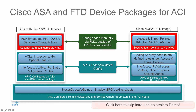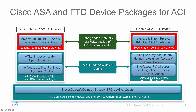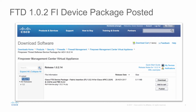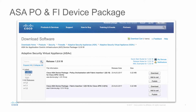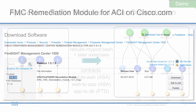On the ASA side, you have full control of device-level configs, policies, and rules, while traffic redirected into the Firepower module has those threat policies remaining in FMC. On the FTD device package, device-level configs are provisioned with APIC, while interfaces use security zones to attach into pre-configured threat policies on FMC. FMC controls all the intricate policies like URL filtering, AMP, etc. These are links on Cisco.com for downloading these device packages used in this demo, including the remediation module.